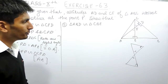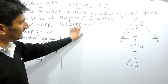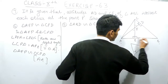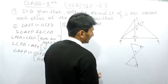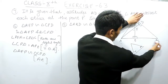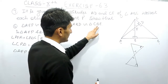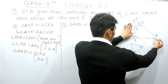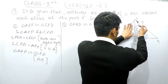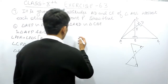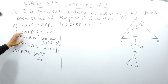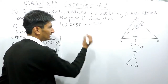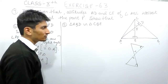Now in the second part we have to prove that triangle ABD is similar to triangle CBE. Again, the same approach applies — we have to prove that two angles in triangle ABD are equal to two angles in triangle CBE.